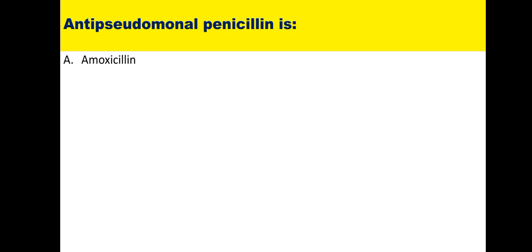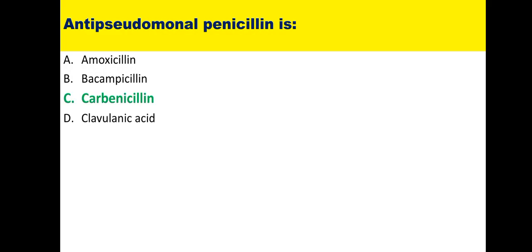Fifteenth: which is the anti-pseudomonal penicillin? Options are amoxicillin, bacampicillin, carbenicillin, and clavulanic acid. Clavulanic acid is not a penicillin, so it is excluded. Ampicillin, bacampicillin, and carbenicillin are all extended spectrum penicillins, but among them, the agent effective against Pseudomonas is carbenicillin and ticarcillin. So the answer is carbenicillin.